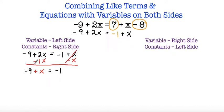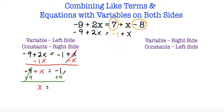Now I'm going to move all constants to the right side. I have negative 9, so to get rid of it I'm going to add both sides by 9. These are opposites so they cancel out, leaving positive x on the left. On the right I have negative 1 plus 9 — since the signs are not the same I subtract, giving me 8, and I keep the sign of the number with the greatest absolute value which is 9. So my answer is x is equal to positive 8.